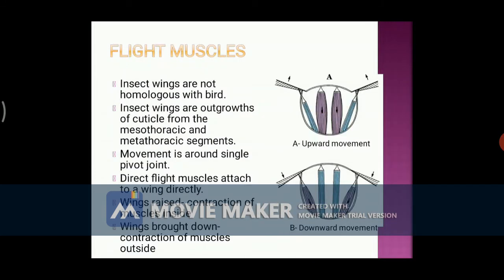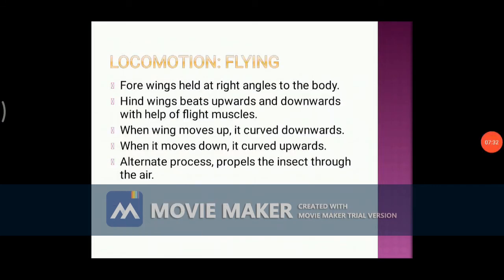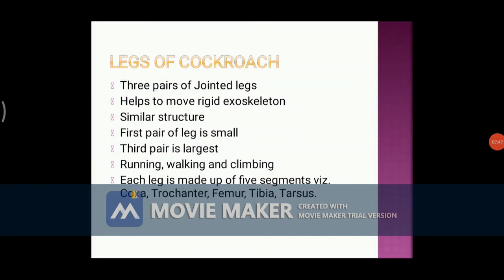The muscles beat in an oblique manner during flight. The forewings are held at a right angle to give support. Two pairs of muscles help in flight: vertical muscles contract and at the same time longitudinal muscles relax — as a result, the tergum is depressed and wings are pushed upwards. In reverse, vertical muscles relax and longitudinal muscles contract, elevating the tergum and pushing wings downwards.